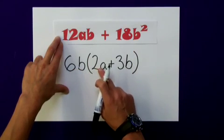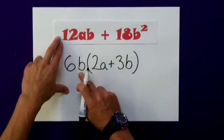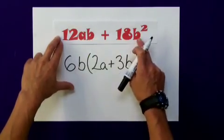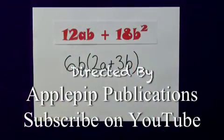6b bracket 2a plus 3b, when multiplied out, would actually give me this back. And that is factorization. I hope that helps.